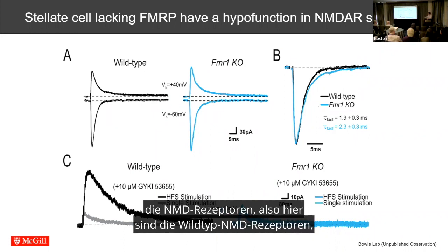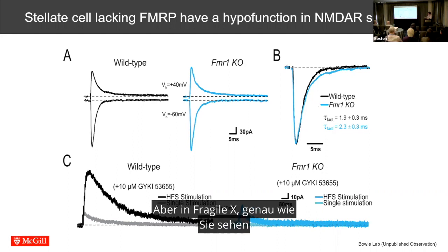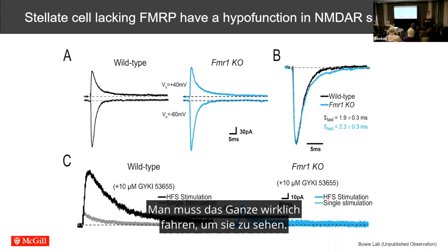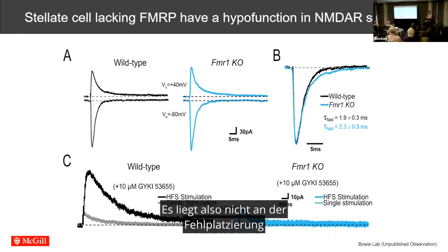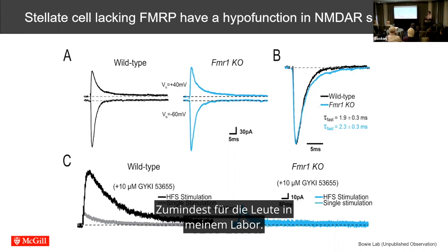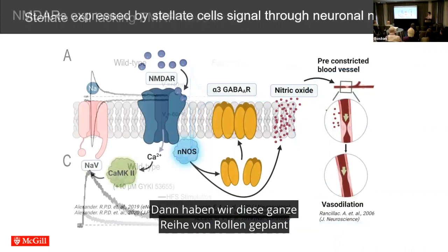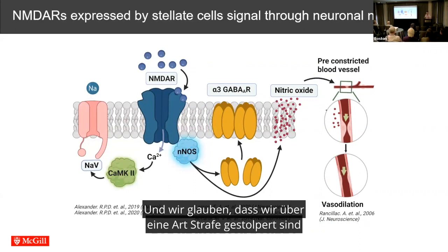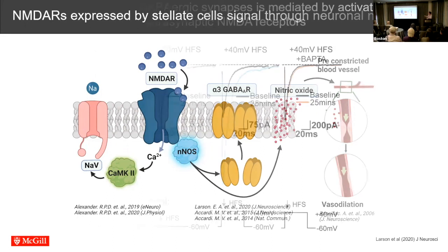The interesting thing is when we looked at the NMDA receptors. Here's the wild-type NMDA receptor: you get this enormous response when you drive the spillover of glutamate from these synapses. But in fragile X — just like you see in hypo-functioning GRIN disorders, and this is the link — you get a much, much smaller NMDA receptor response. You have to really drive the whole thing to see it. Now, if you try to augment glutamate transmission so it spills over further, it doesn't change the amplitude, so it's not due to misplacement of NMDA receptors. We then did something surprising: we went back to the wild-type mouse and tried to understand what these NMDA receptors are doing there. Over the last six or seven years we've mapped out a whole bunch of roles and we think we've stumbled upon a putative homeostatic mechanism with NMDA receptors at the center.